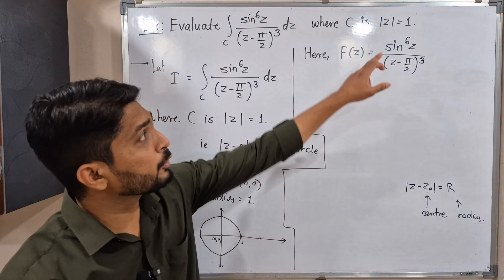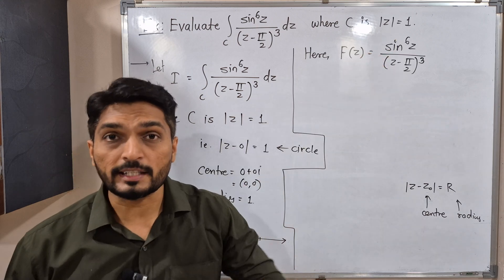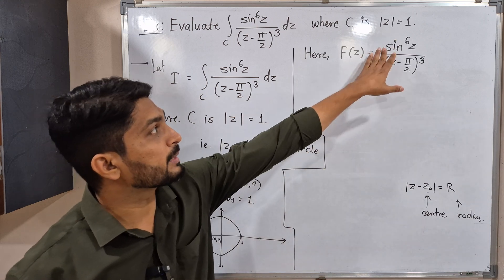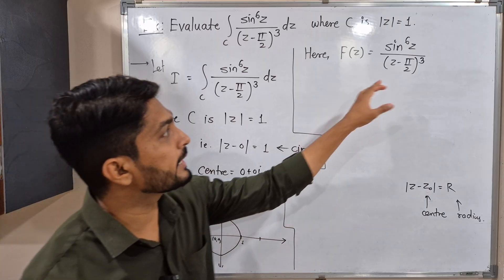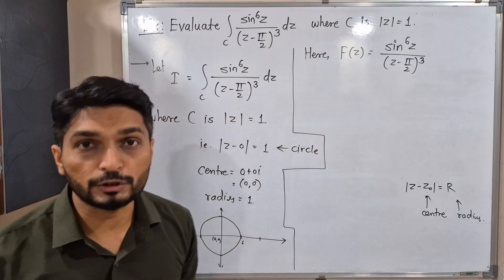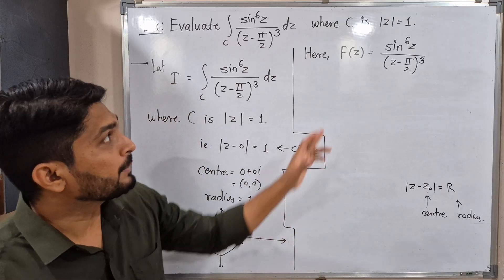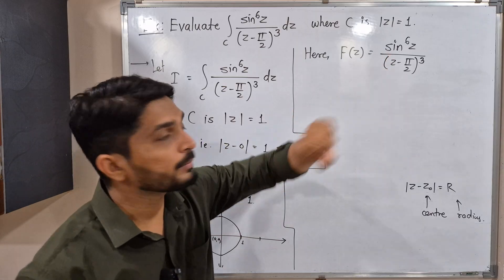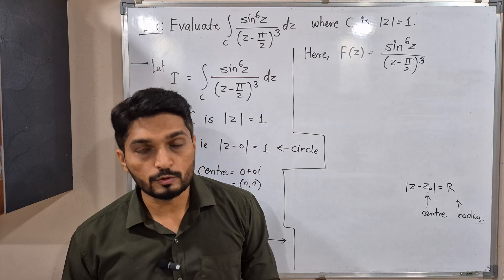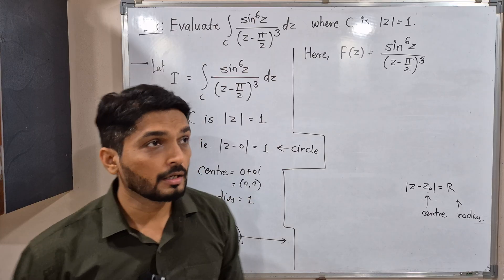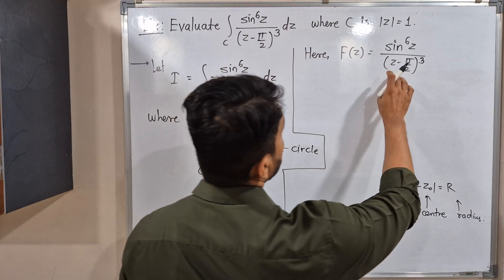Let's find its singular points—that means where the function is not analytic. Here the numerator is sin z, which is always analytic. The denominator is z minus π by 2, a polynomial function that is also analytic. It will not be analytic when the denominator is zero. If the denominator becomes zero, the value becomes infinity, so the function is not analytic. Tell me, when will this denominator be zero?